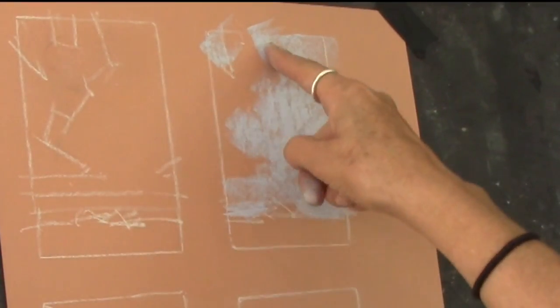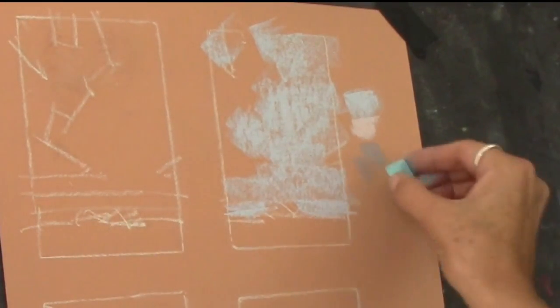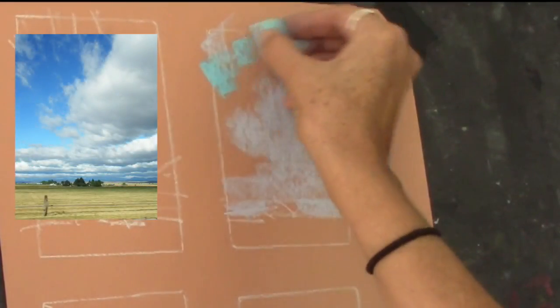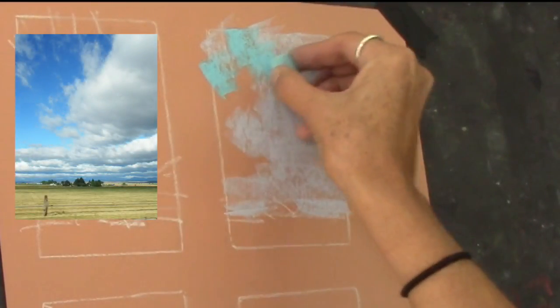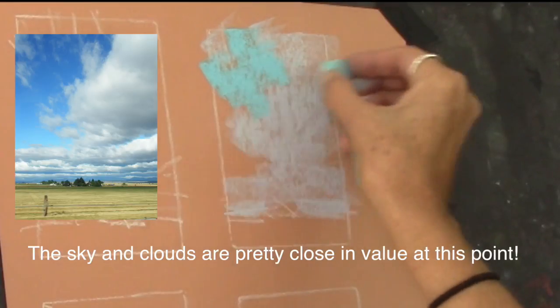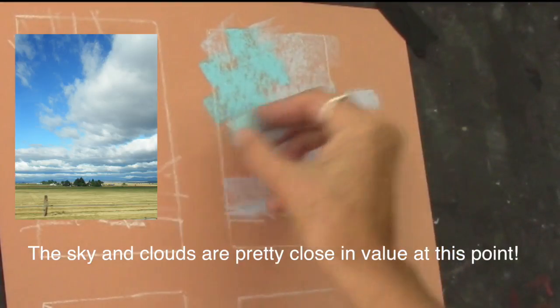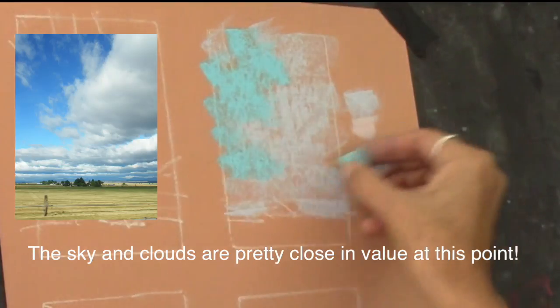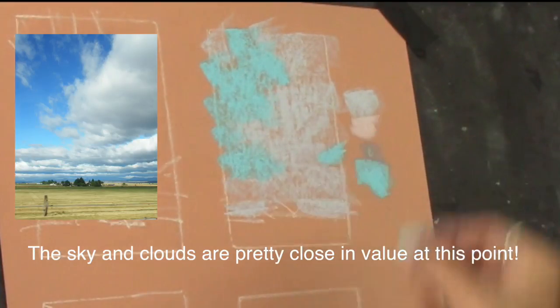My next step is to pick an average value for the sky. And I don't want it to be too dark. And I don't want it to be too light. It's the average value of the sky.